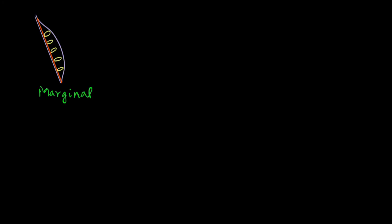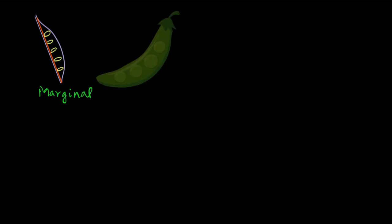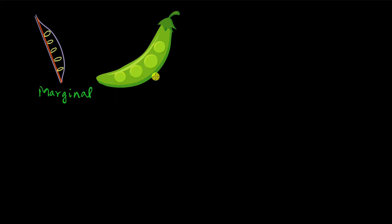This is the same thing that you see in peas. This is the pea fruit, not the ovary, but it's the same type of arrangement as the ovary because it's the ovary that turns into the fruit. So this type of placentation is called marginal placentation.